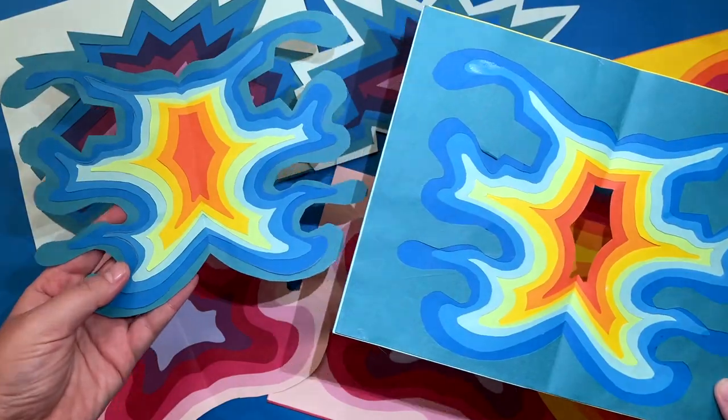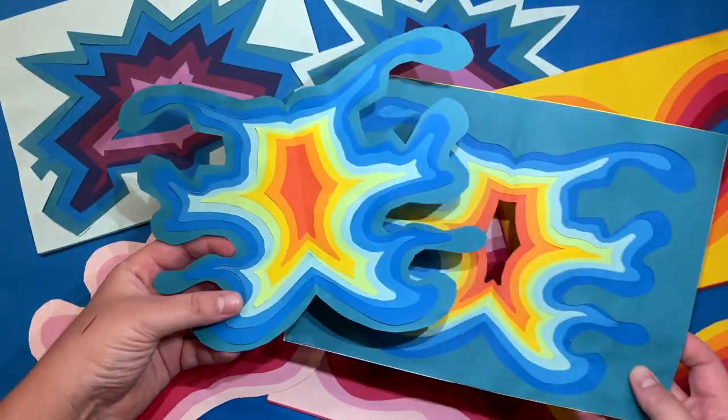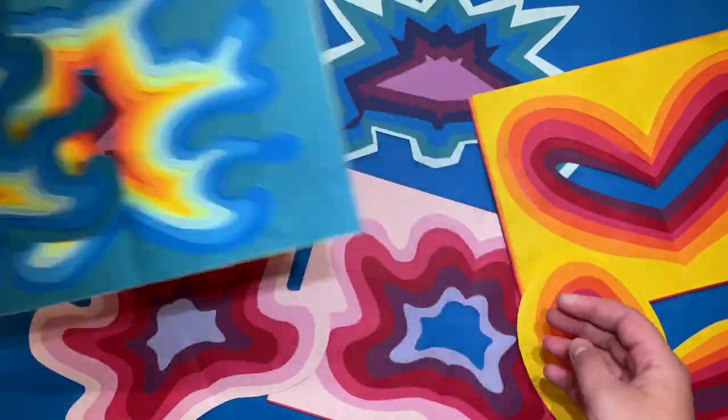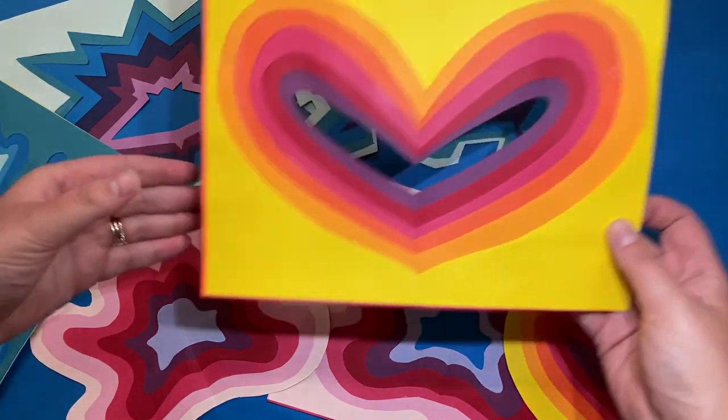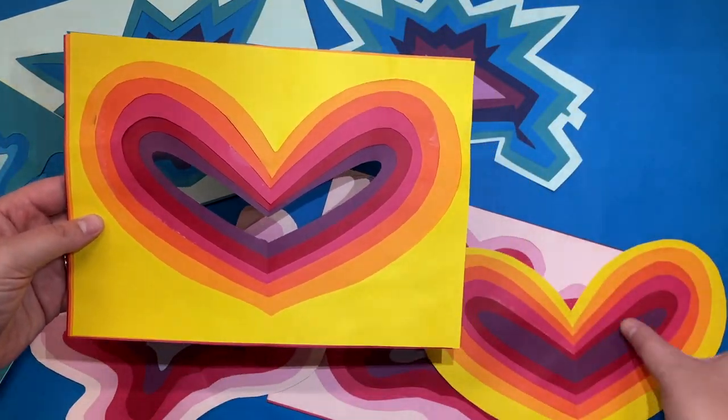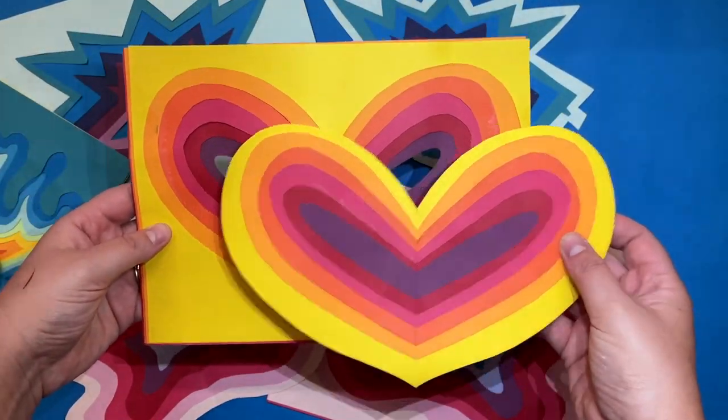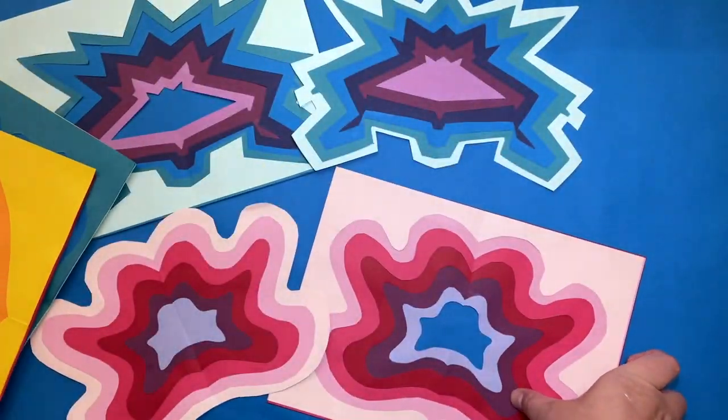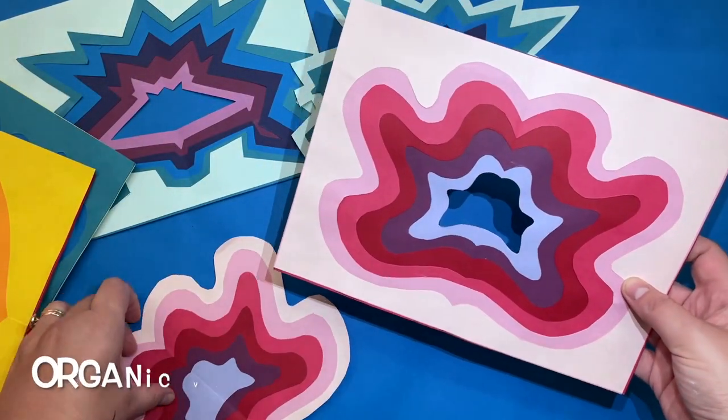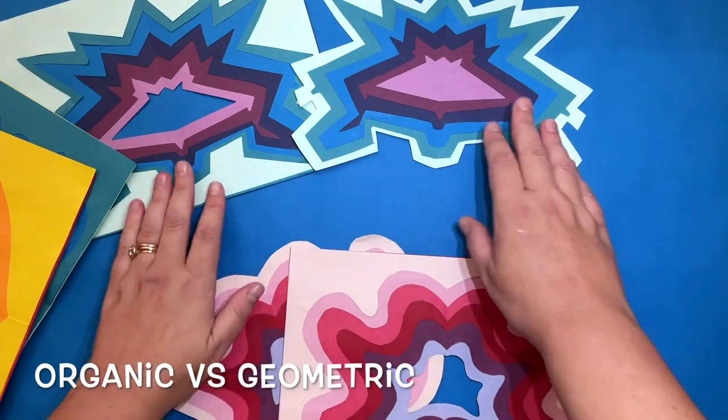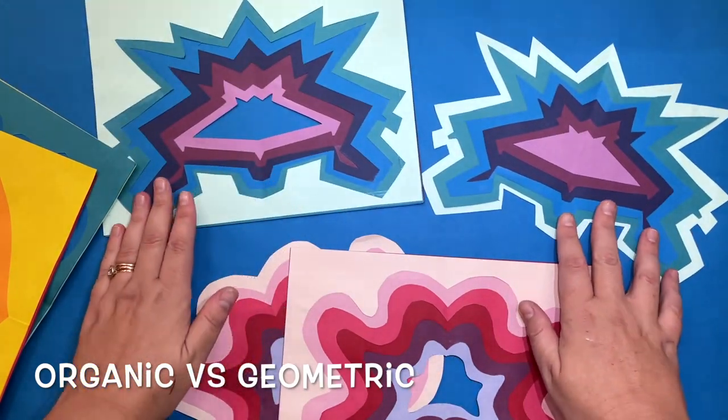You can see some examples of a variety of different shapes. We have some funky organic shapes, some simple recognizable shapes. This one is a heart. More organic simple shapes, and some more complicated geometric shapes.